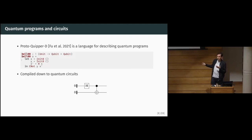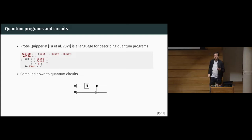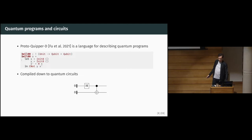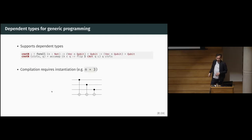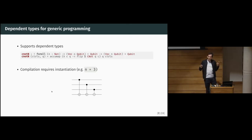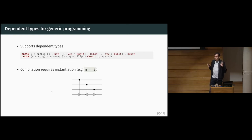Once we have this description of a quantum program, we can generate a circuit so that we are able to execute it on a quantum computer. For example, for this program, we can generate this simple quantum circuit where we have all the gates we described. Since this is a dependent type programming language, we can make some more interesting operations. For example, here we have a CNOTN function, which takes as input a target qubit and a list of control qubits, where the size of this list can be any natural number.